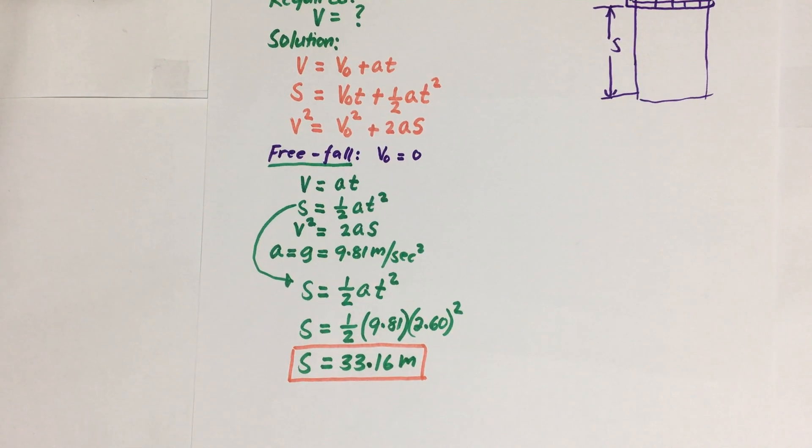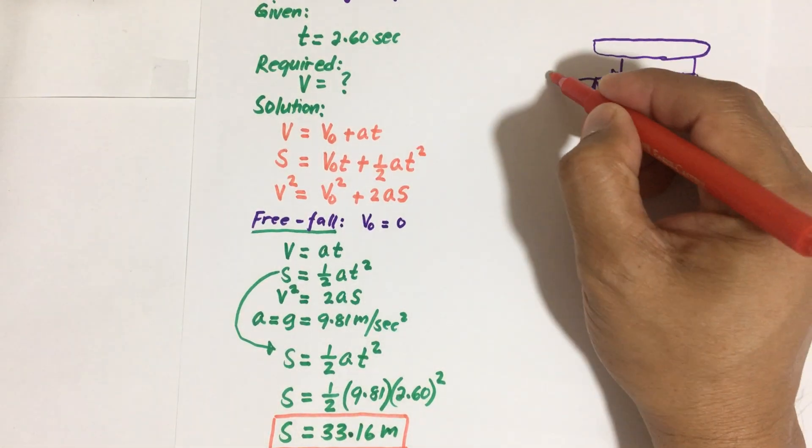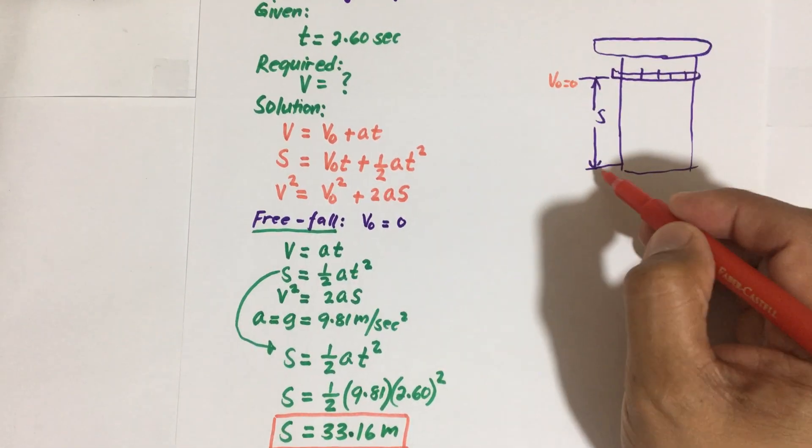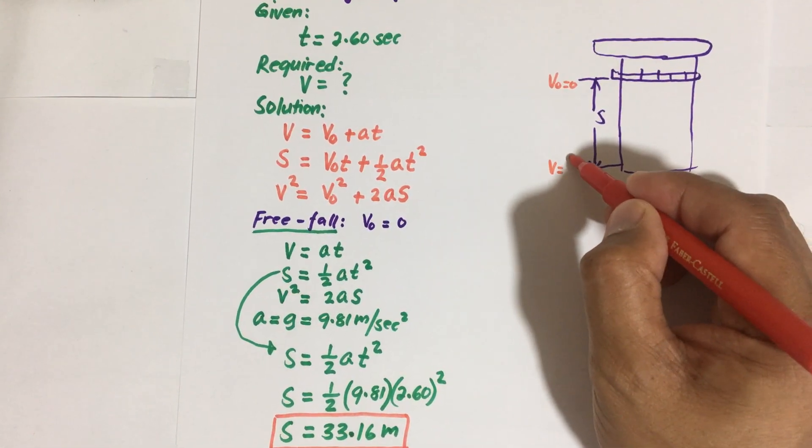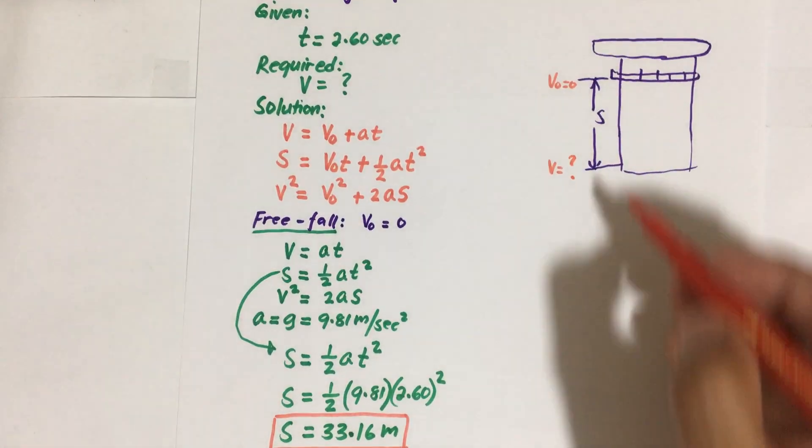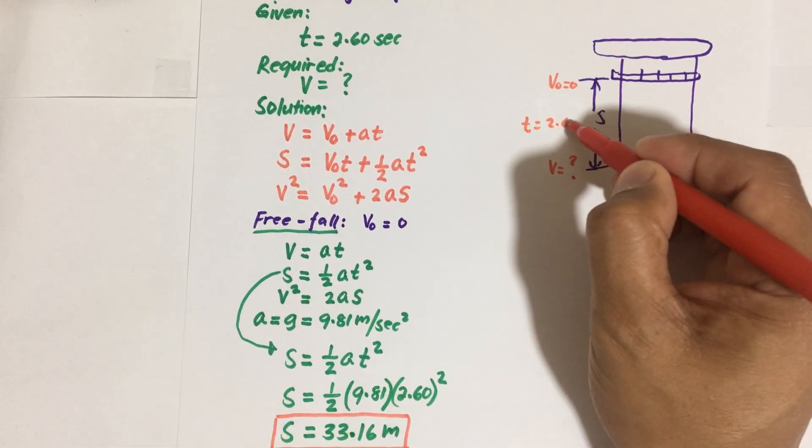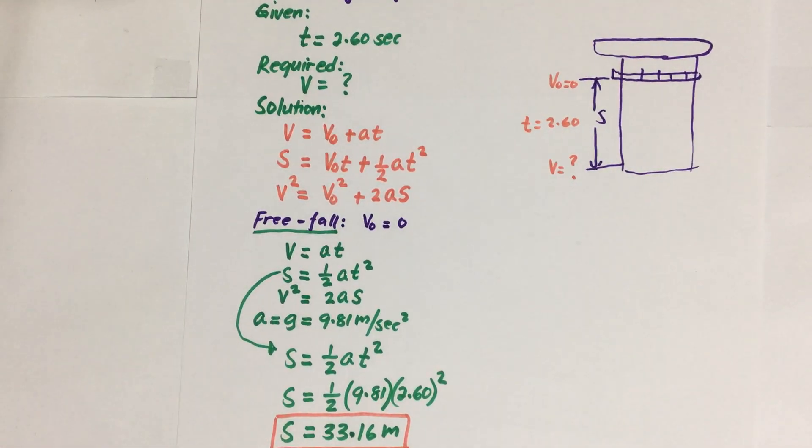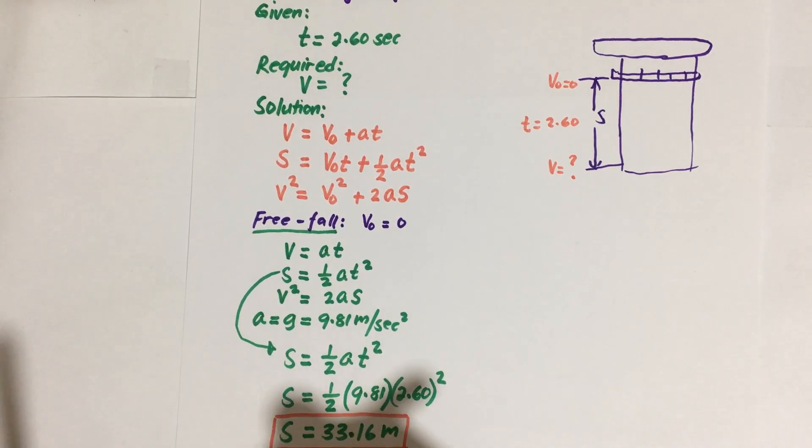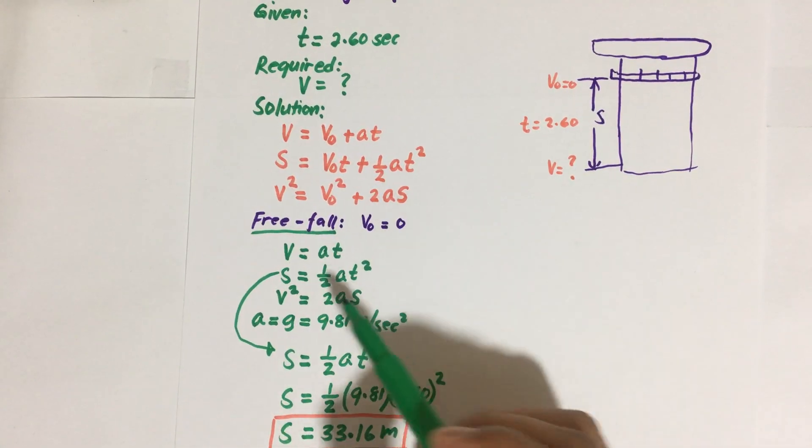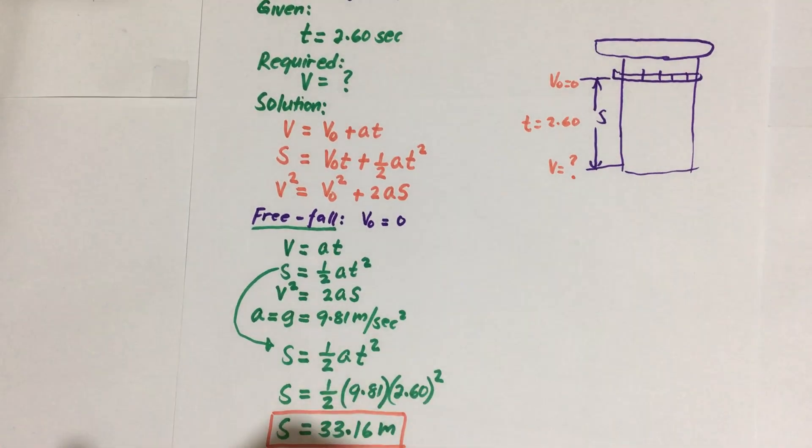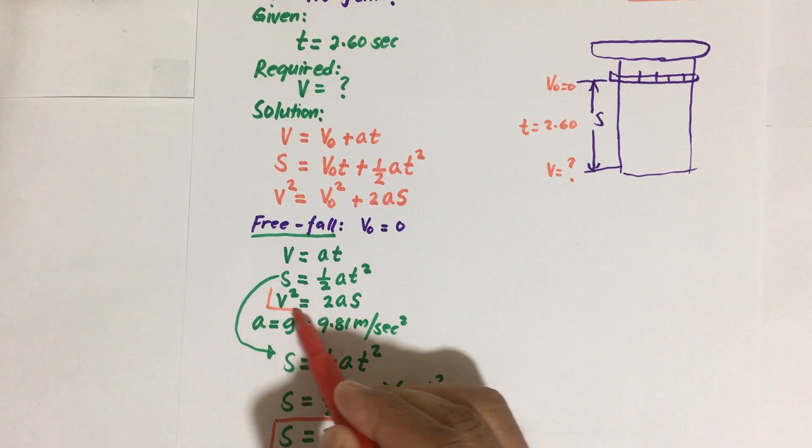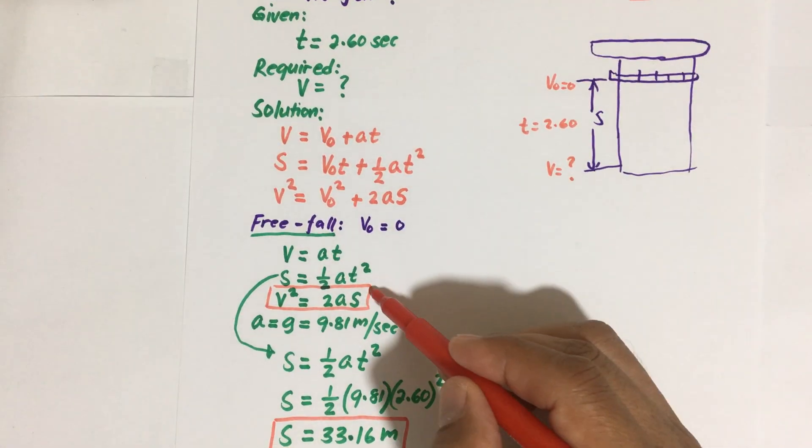Now the question of what will be his final velocity. So what will be his final velocity when he reaches this point after a time t, which is 2.60 seconds? All right, so we are going to use the third formula, so this one. So we have to make use of this.